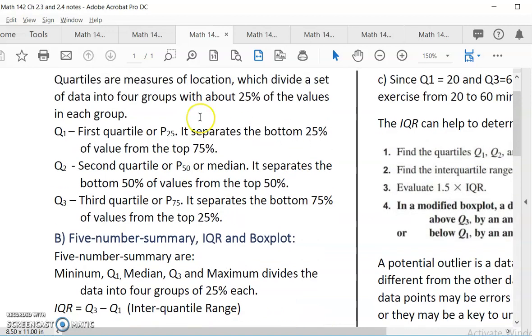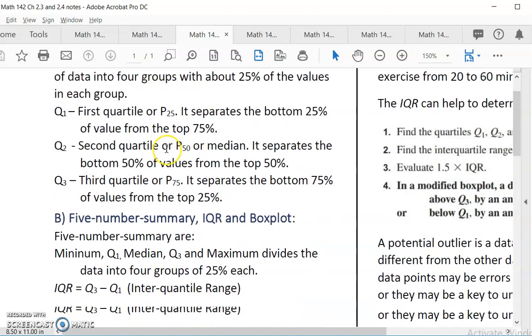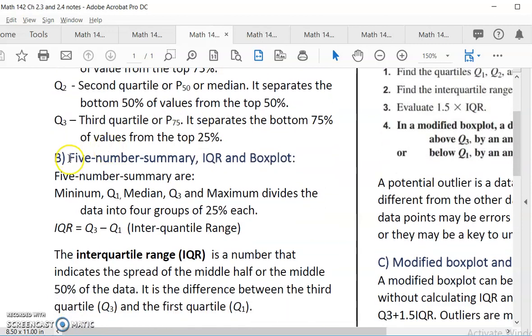In order to know how the data are separated, we have a special term or a group of numbers called five number summary. The five number summary is five numbers that you can find from the data: minimum, Q1, median, Q3, and maximum. One, two, three, four, five. If you have this five number, your data will be divided into four groups with 25% from each group.